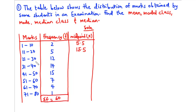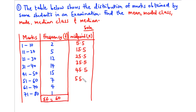21 plus 30 is 51, divided by 2 is 25.5. From here we can see the trend — we add 10 to each successive midpoint to get 35.5, 45.5, 55.5, 65.5, and then 75.5.